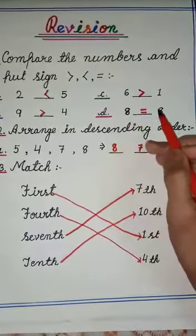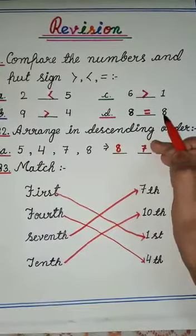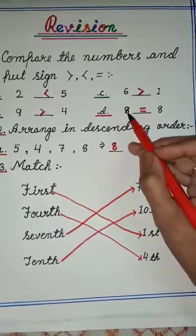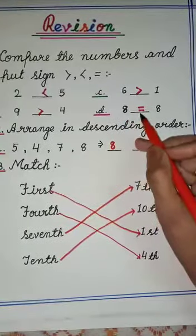Here we have 8 and this side also we have 8. So both the numbers are equal. So we will put here this sign. This is equal to sign and we will say 8 is equal to 8.